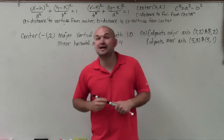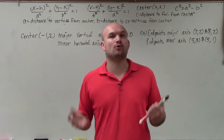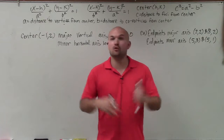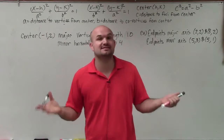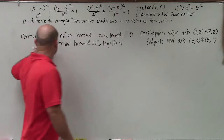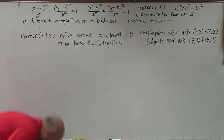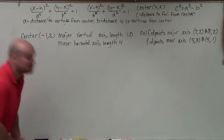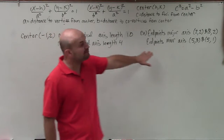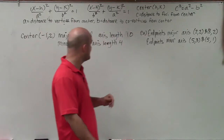Welcome, ladies and gentlemen. What I'd like to do is show you how to write the equation of an ellipse when the center is not at the origin. In the previous video, we worked on problems that only had the center of the ellipse at the origin. In this case, they give us a center at negative 1, comma 2, so obviously it's not at the origin. In the other one, we're going to plot the information and determine that it's not at the center.